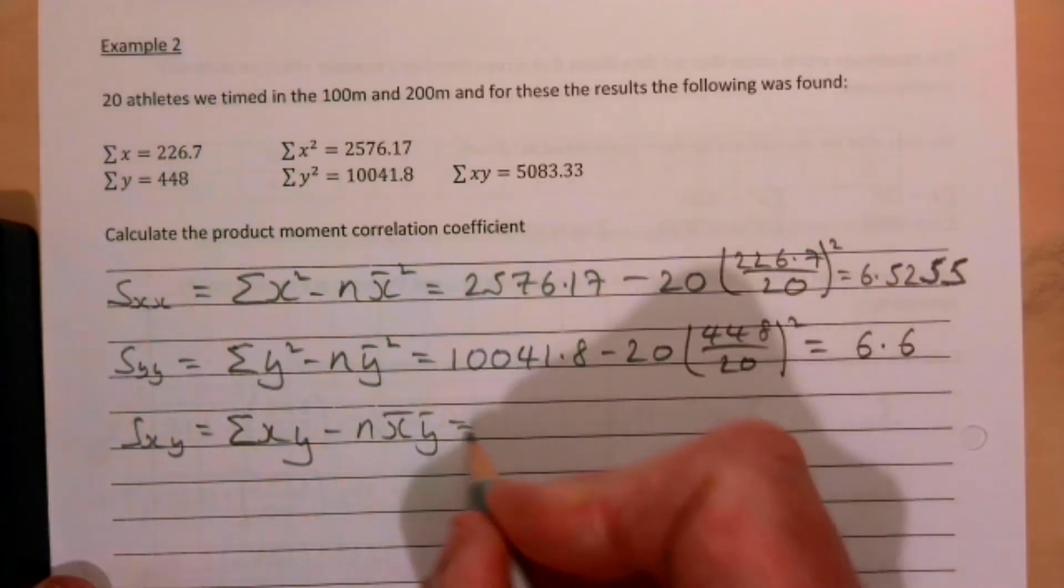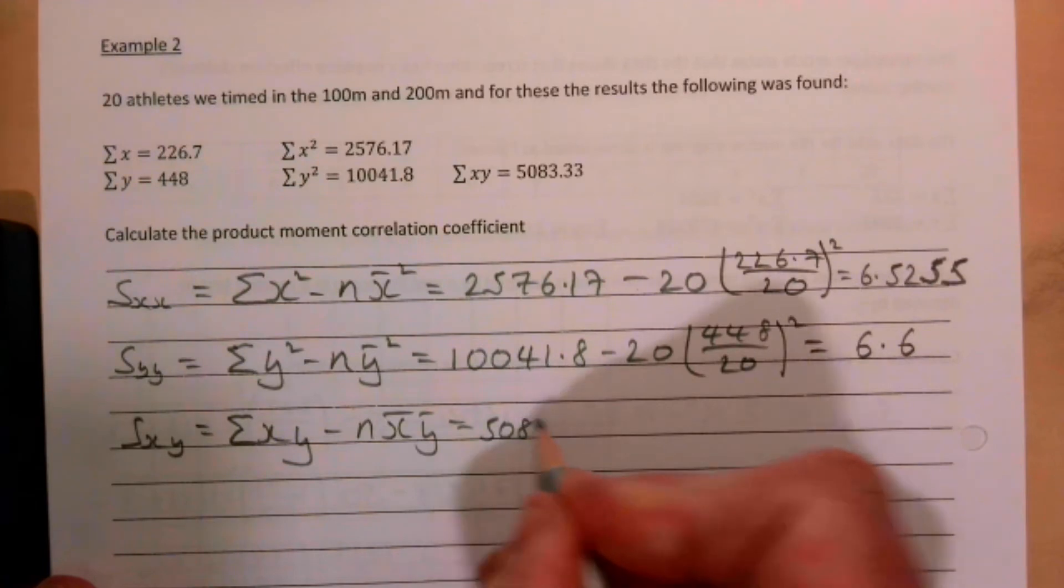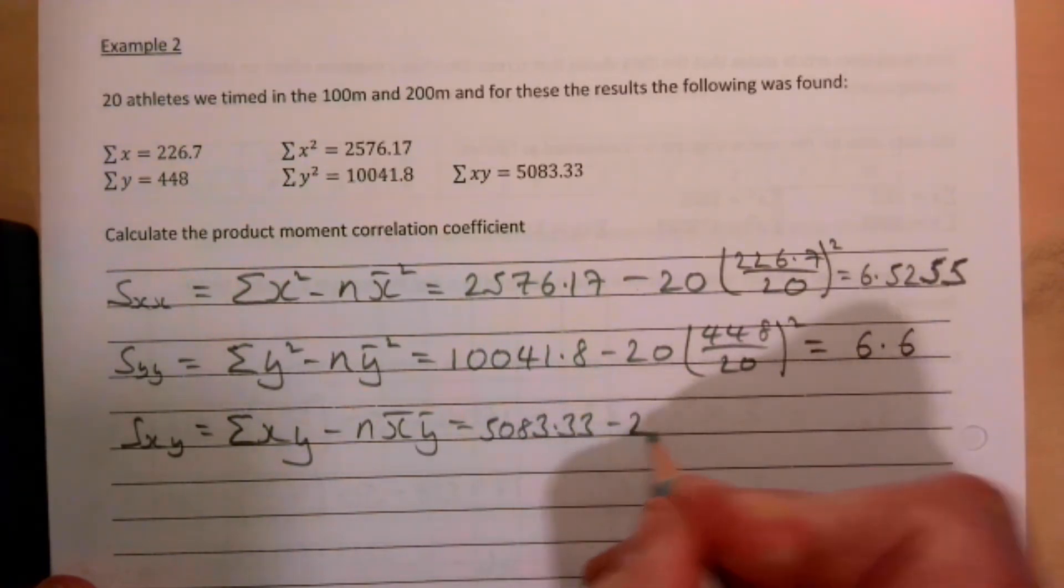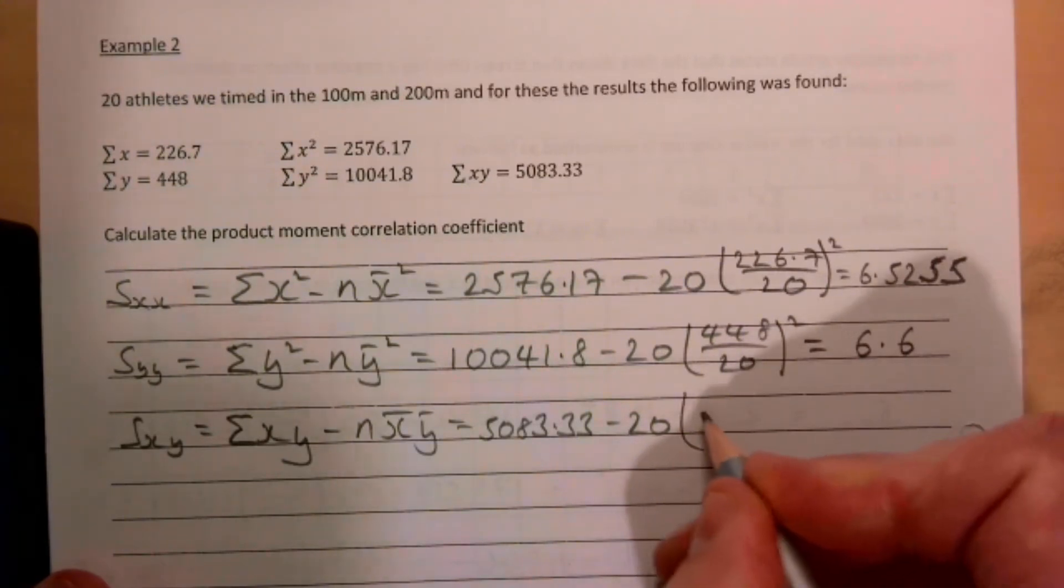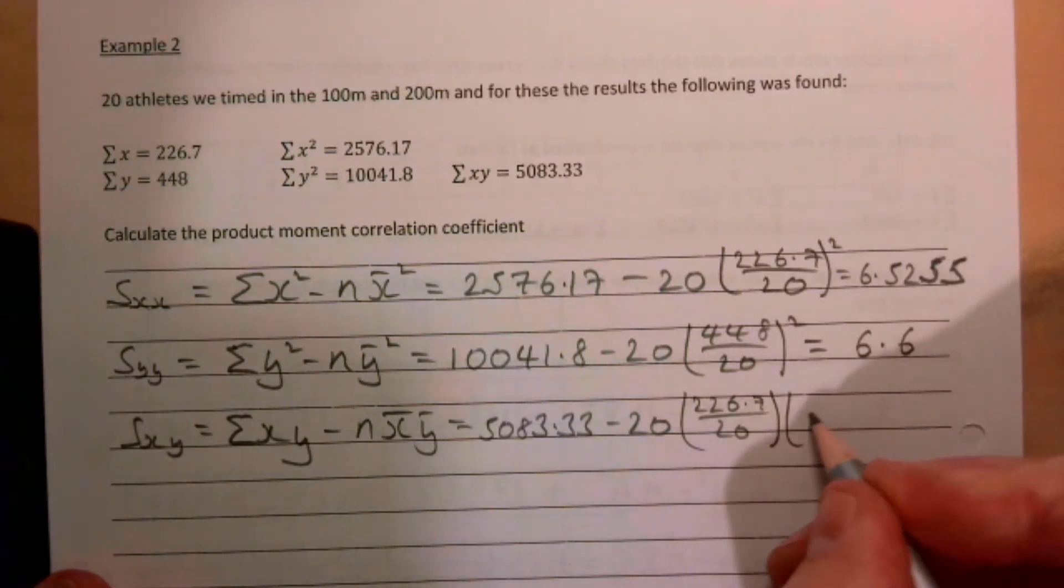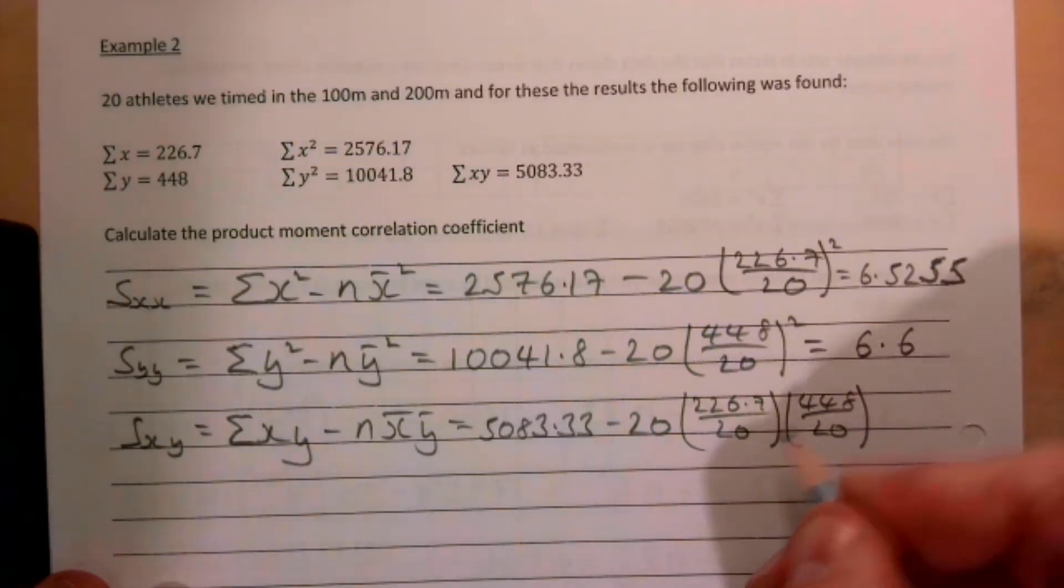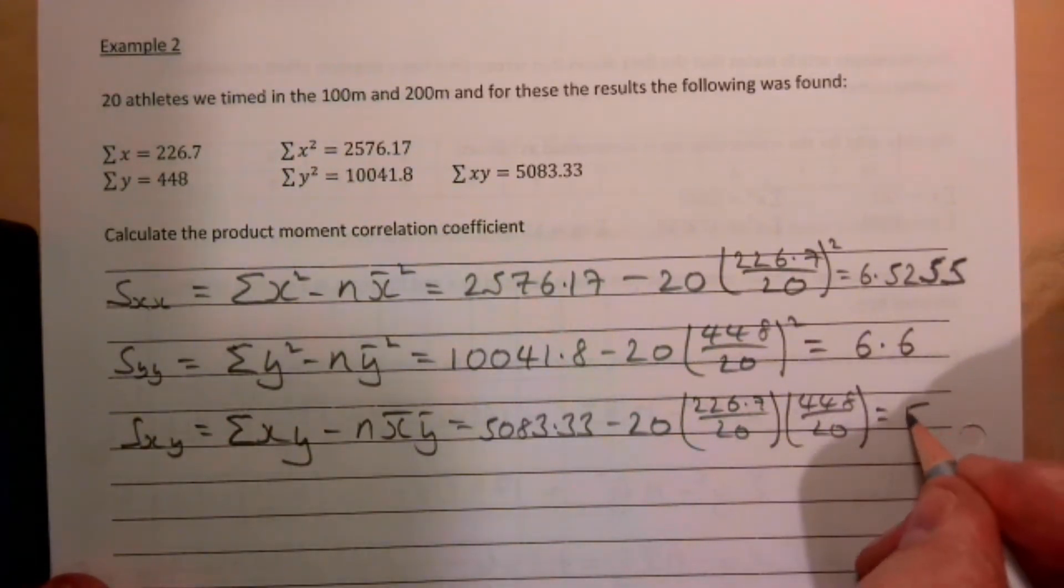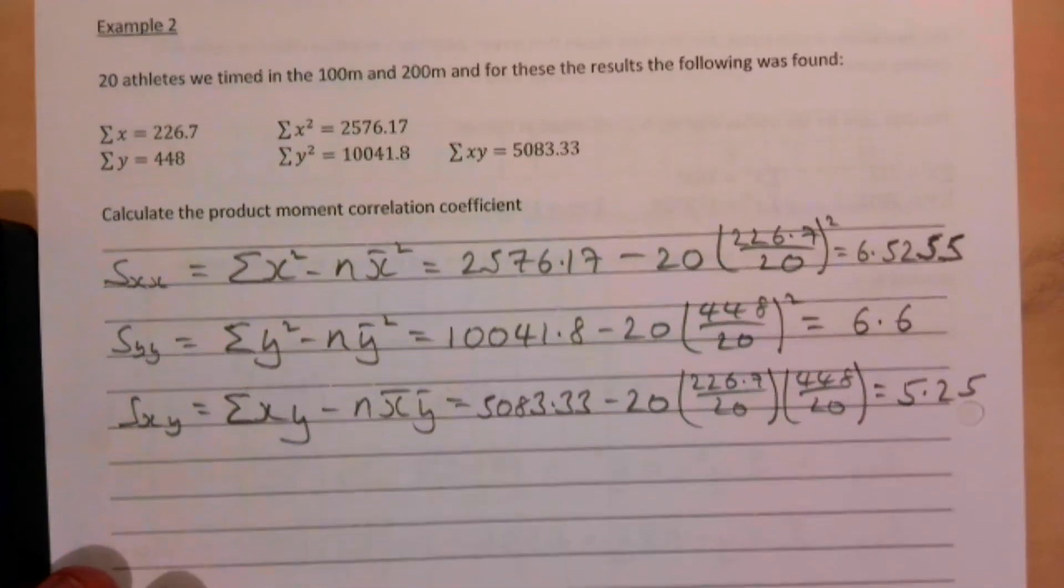So the sum of the xy's is 5083.33 take away 20 times 226.7 over 20 times 448 over 20.